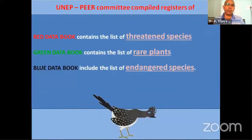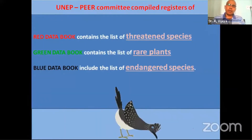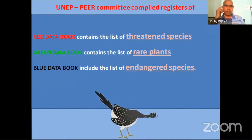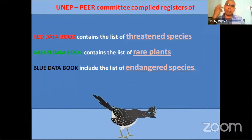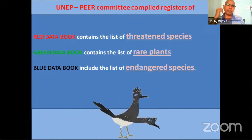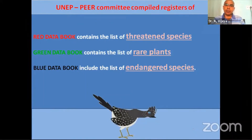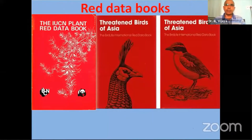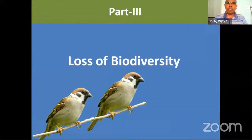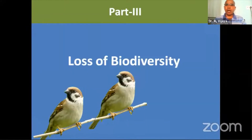The IUCN, the union for nature and environmental protection, annually compiles registers: the Red Data Book, which covers threatened species; the Green Data Book, which covers rare plants; and the Blue Data Book, which gives detailed information on endangered species. Some published examples include 'Threatened Birds of Asia' as a red data book.